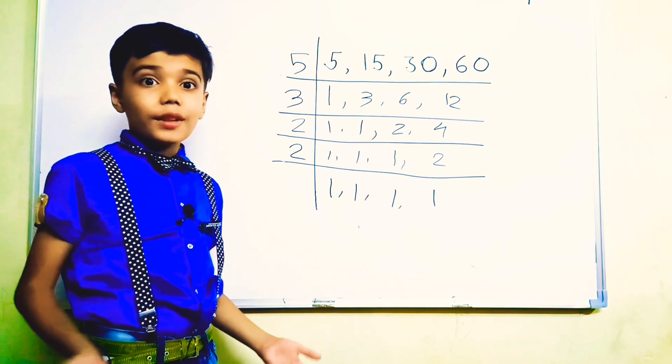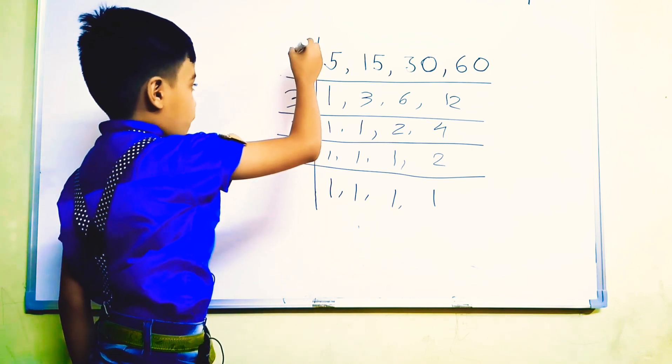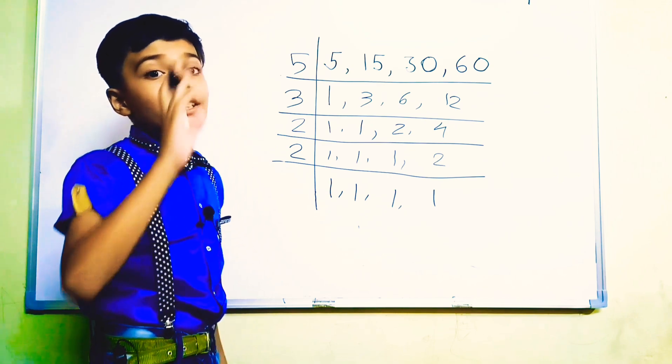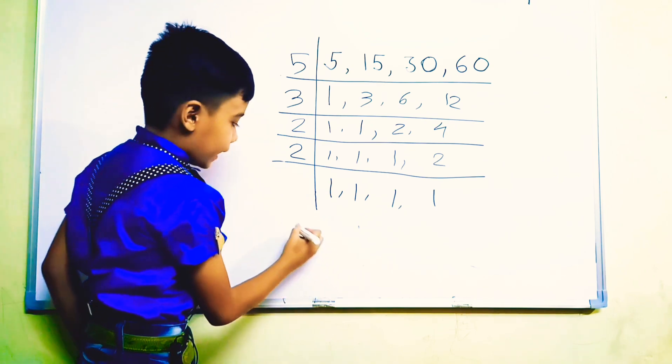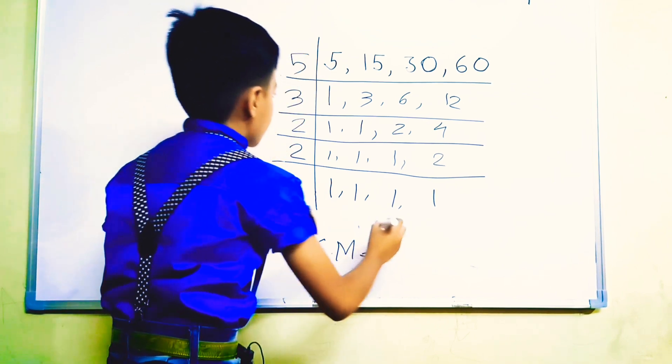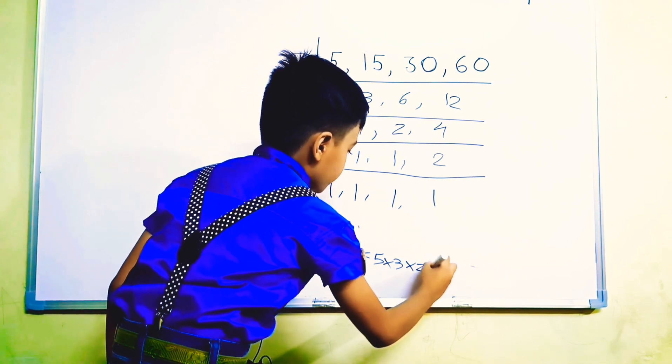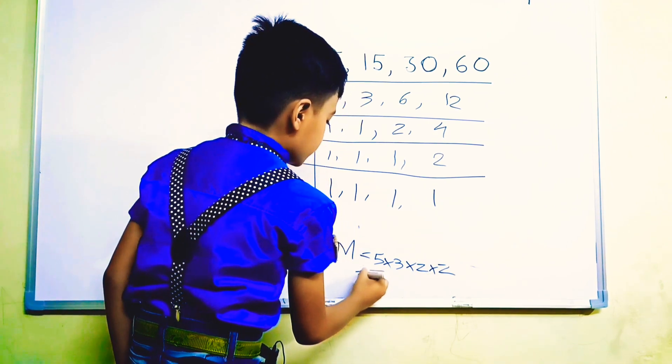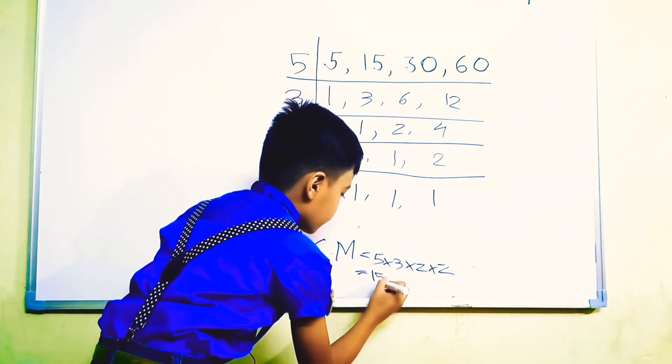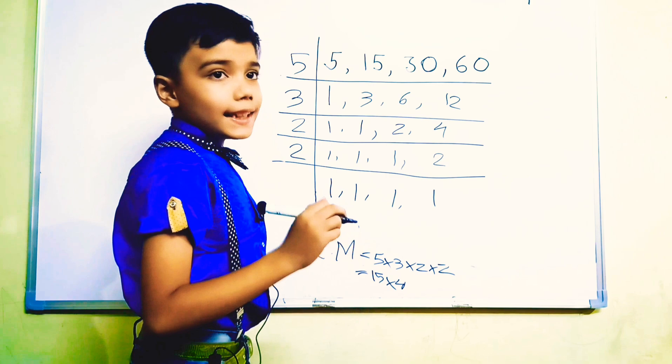But what is the LCM? LCM is the product of all of these numbers. You have to multiply all of these numbers, then you will get LCM. And LCM equals to 5 into 3 into 2 into 2. We have to make pairs. 5 threes are 15, 2 twos are 4, so 15 into 4.